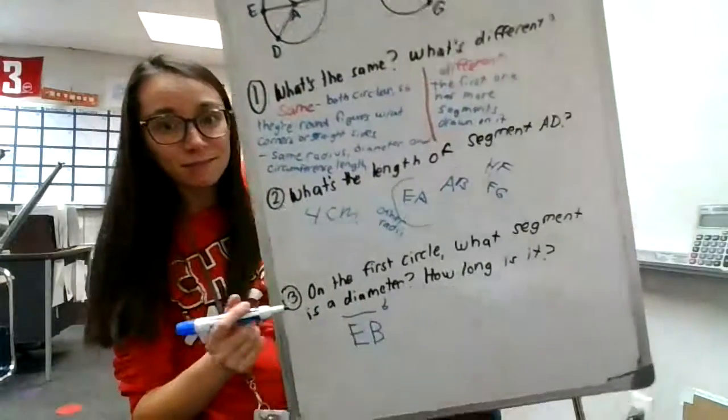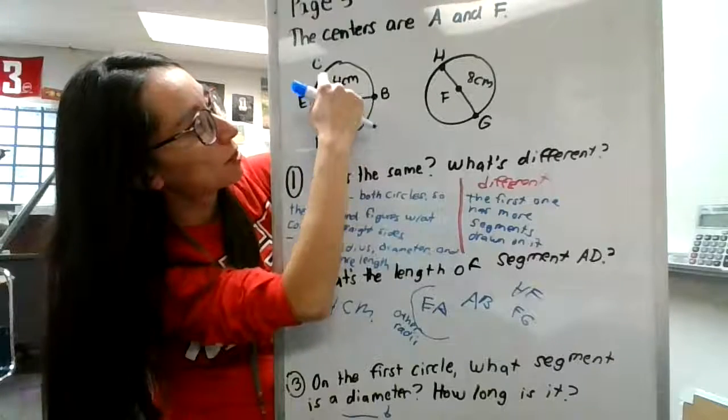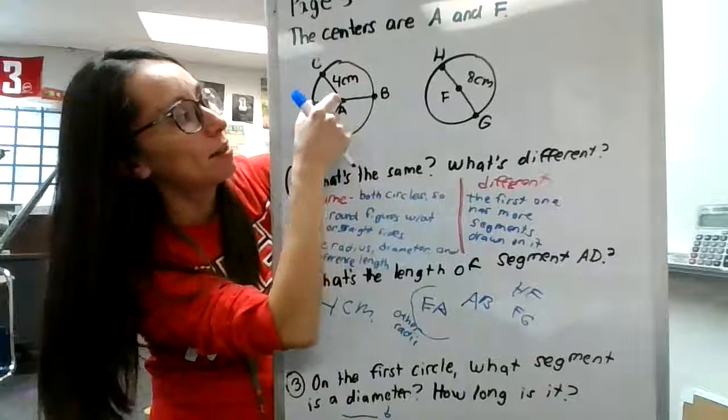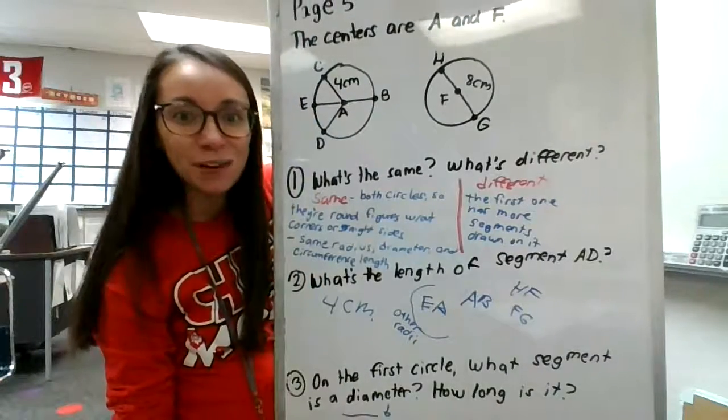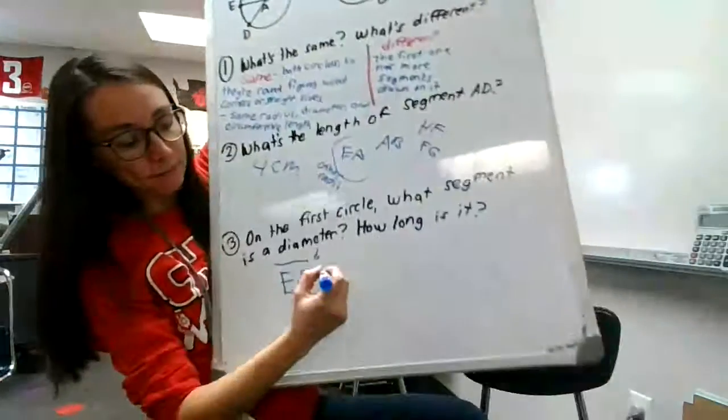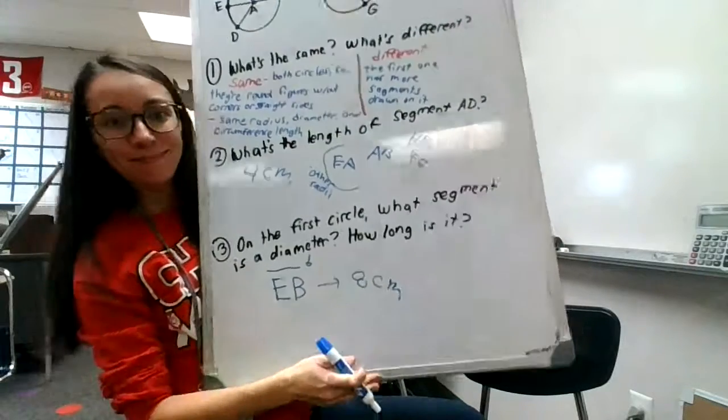And how long is it? Well, if right here is four centimeters, that's a radius. Here's a radius. Here's a radius. Well, what's four centimeters plus four centimeters? Eight centimeters. Yeah, that's the diameter.